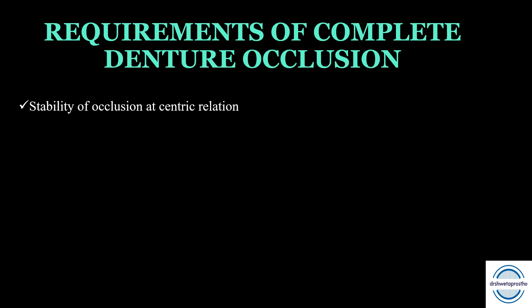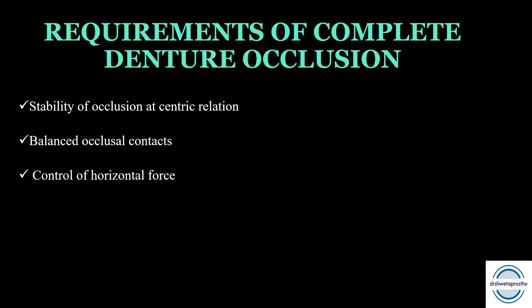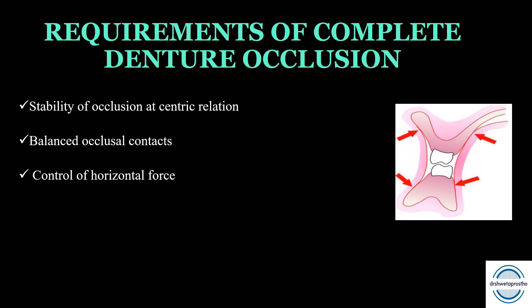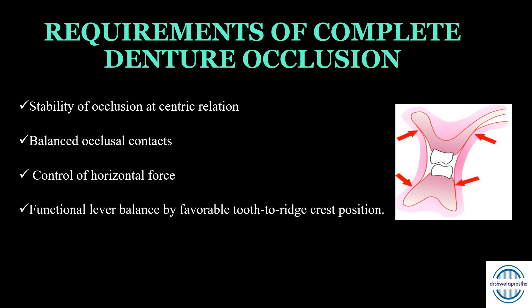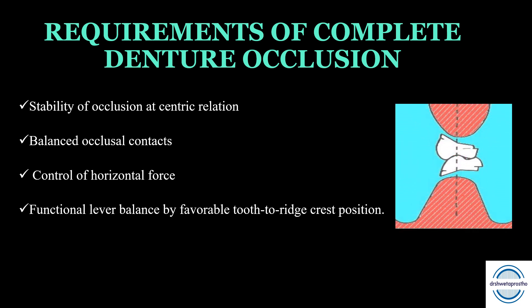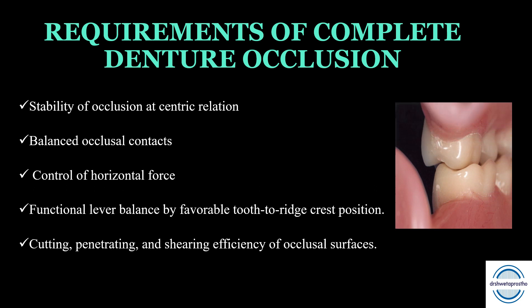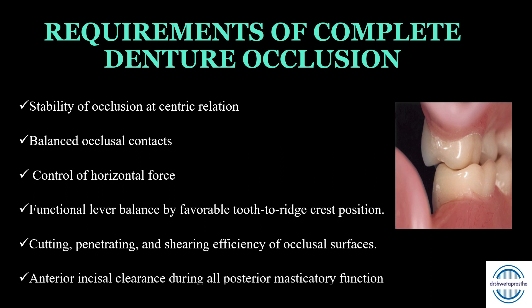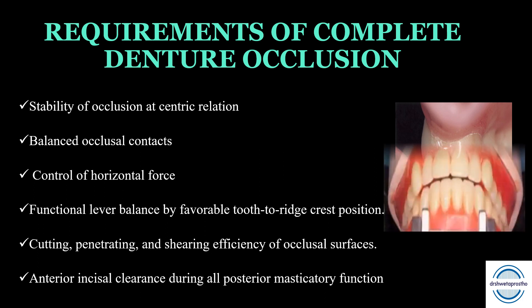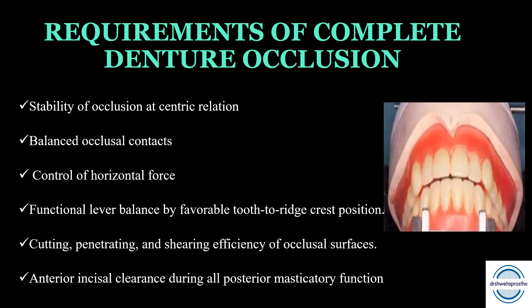Next are the requirements of complete denture occlusion — very important. First, stability of the denture and its occlusion when the mandible is in both centric and eccentric relation. Second, balanced occlusal contacts — there should be at least tripod contacts during all eccentric movements. Third, control of horizontal forces, which can be done by decreasing the cuspal height. Fourth, functional lever balance, maintained by the vertical tooth-to-ridge-crest relationship. Fifth, cutting, penetrating, and shearing efficiency of the occlusal surface should simulate natural teeth, achieved by using anatomic or cusp teeth. Last, anterior incisal clearance during all posterior masticatory function, given by proper overjet and overbite.